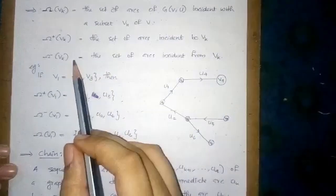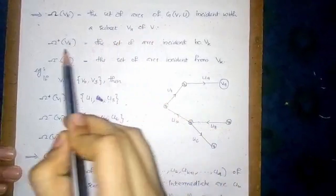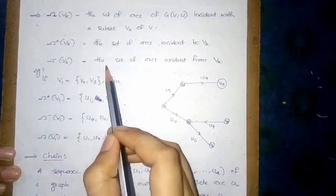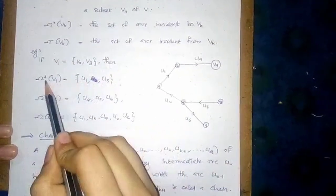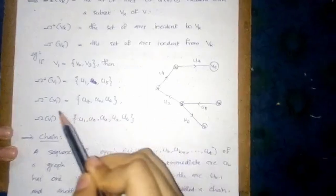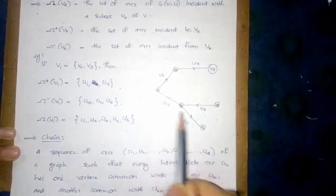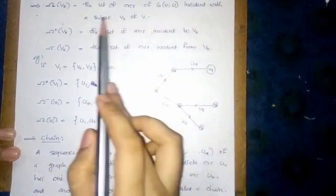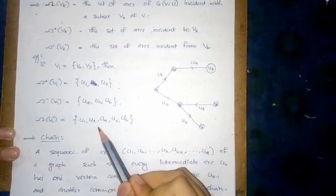Now we can go through some notations used in graph. Omega(Vk) is the set of arcs of G(V,U) incident with a subset Vk of V. Omega-plus(Vk) is the set of arcs incident to Vk, and Omega-minus(Vk) is the set of arcs incident from Vk. Consider this graph. Let V1 = {V2, V3}. Then Omega-plus(V1), the set of arcs incident to V1, is {U1, U5}. And Omega-minus(V1), the set of arcs incident from V1, is {U4, U2, U6}. And Omega(V1) is the union of Omega-plus(V1) and Omega-minus(V1), that is {U1, U5, U4, U2, U6}.